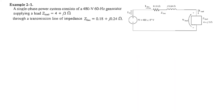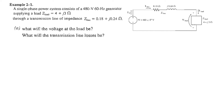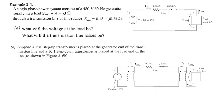Now we come to the question given in the book. A single-phase power system consists of a 480 V, 60 Hz generator supplying a load ZL = 4 + j3 ohms through a transmission line with a given line impedance. We need to find the voltage at the load and the transmission line losses.